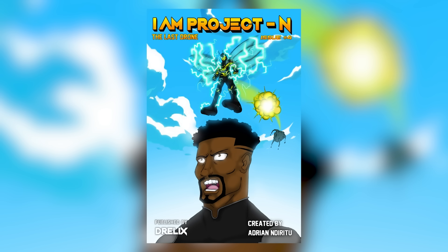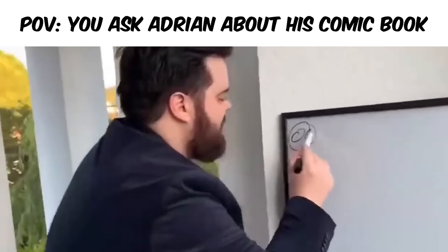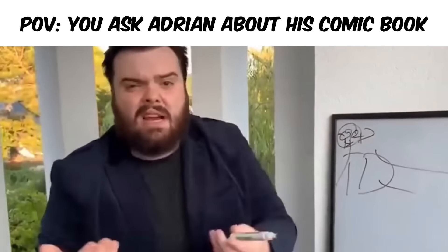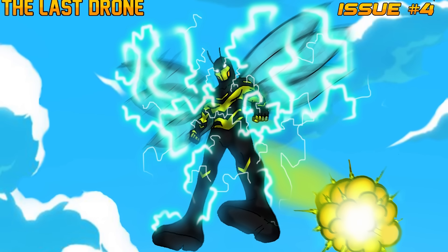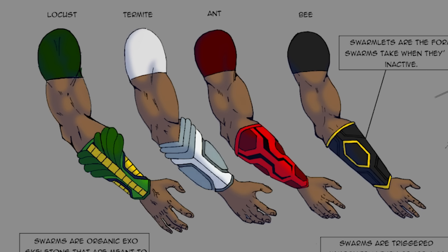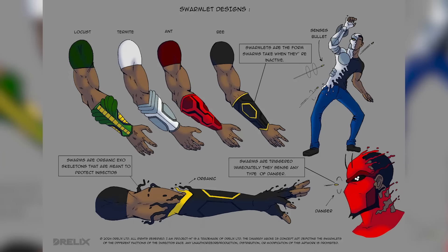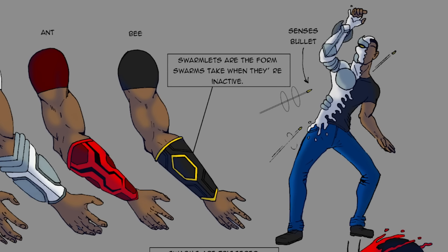In my own comic universe, the main source of the superpowers, especially for my main character Project N, is something called a swarm. The swarm is an organic bio-suit that basically covers a type of person called an insectid. That exosuit that comes onto them is basically indestructible, and usually when they're in a stationary state it's called a swarmlet. Here's some of the designs I have for the swarmlet for the different types of insectids.